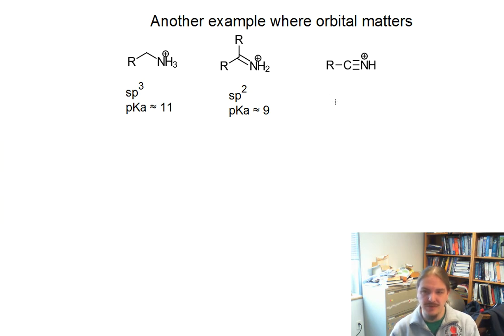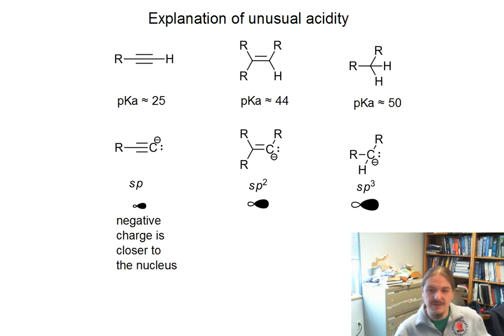So in the protonated nitrile, they are sp hybridized, and the pKa is around negative 10. So there is a massive difference in acidity between sp and sp2, just like there was for the hydrocarbon. So for the nitrogen example, the pKa difference between sp2 and sp is almost 20 pKa units. For the carbon, again, it's almost 20 pKa units. So it's a very big difference between sp2 and sp.